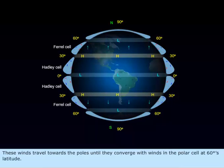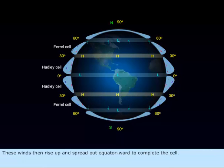These winds travel towards the poles until they converge with winds in the polar cell at 60 degrees latitude. These winds then rise up and spread out equatorward to complete the cell.